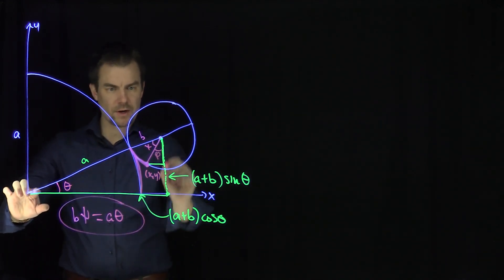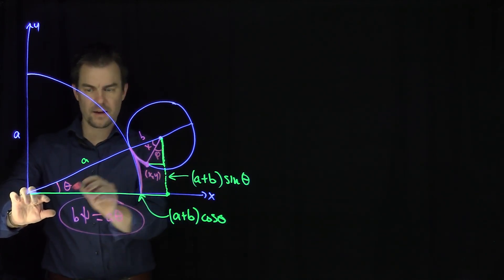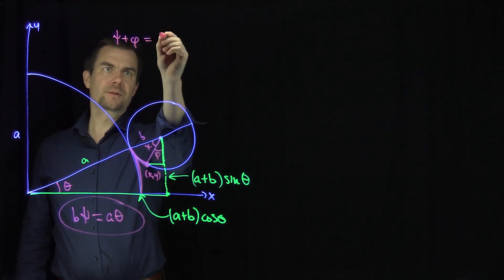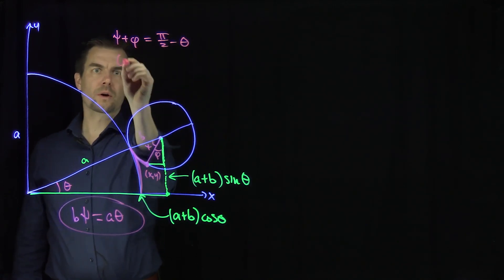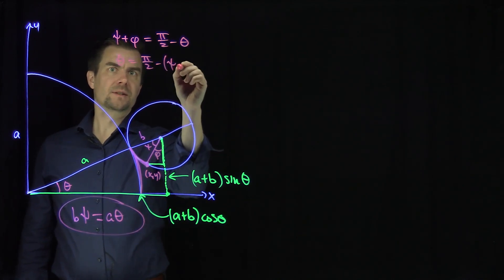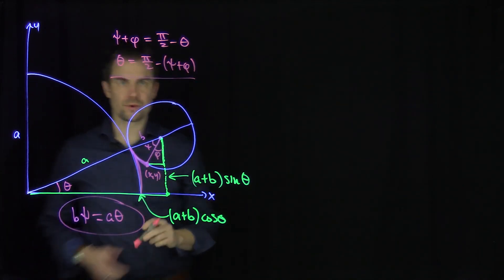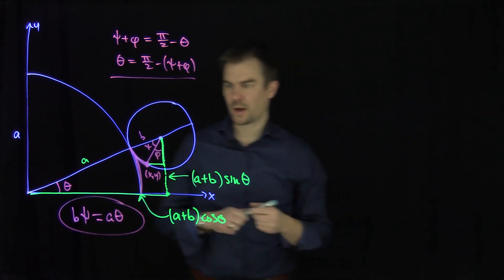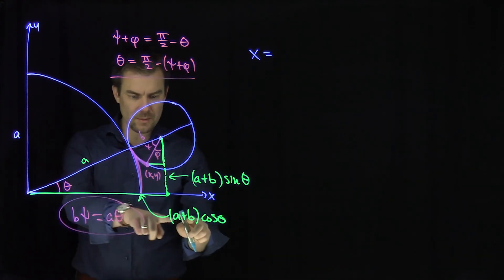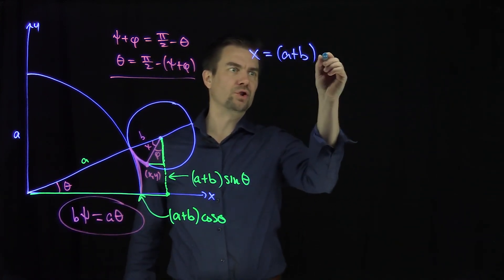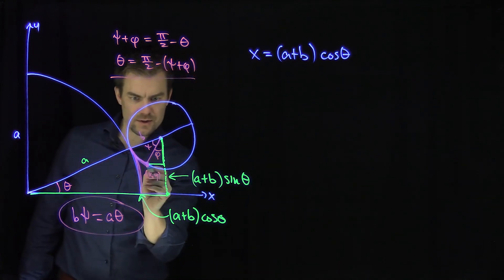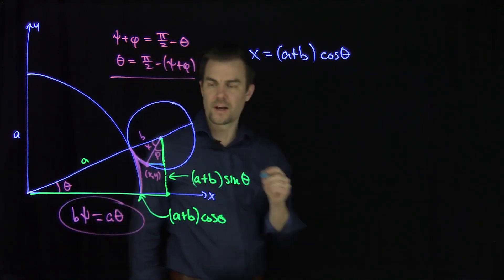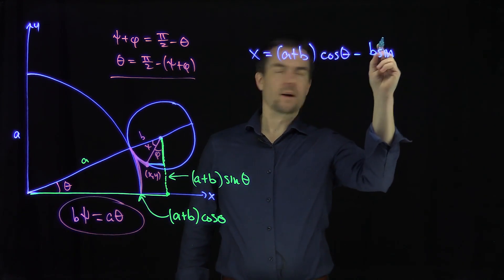So now if we look at this, I have a big right triangle over here. There's a relationship between phi, theta, and psi. It must be the case that phi plus psi plus phi equals pi over 2 minus theta, or equivalently that theta equals pi over 2 minus psi plus phi. So they're co-angles to each other. Now the x coordinate: the x point is going to be a plus b cosine theta, but I've overshot the point. So I have to subtract off this distance over here, and that distance is exactly b times the sine of phi.